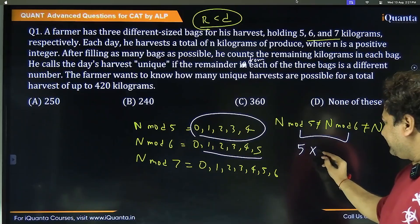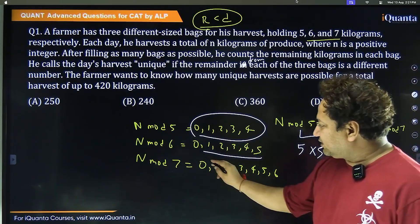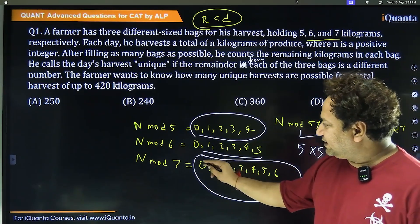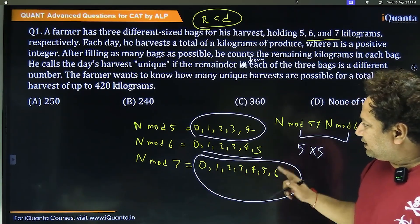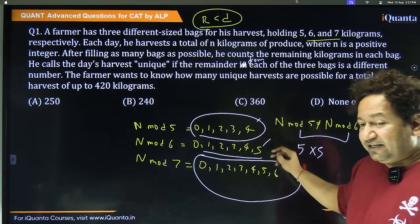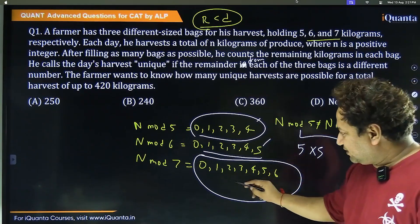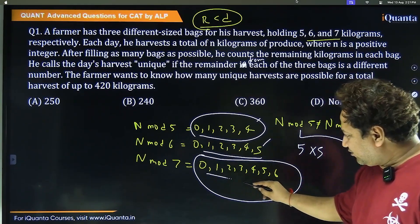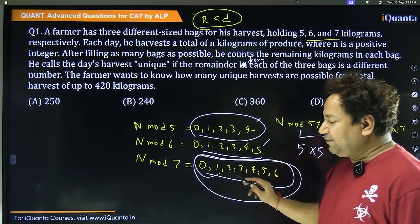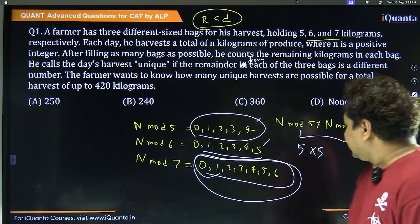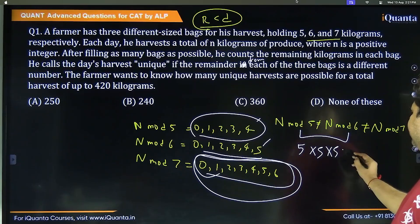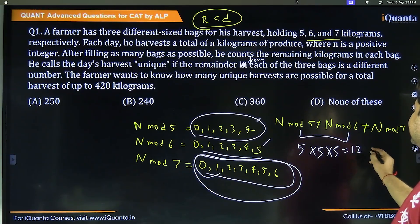Similarly, for mod 7 we have 7 possibilities. If I choose one from mod 5 and one from mod 6 which are distinct, then out of the 7 possible remainders for mod 7, only 5 will remain because 2 are already used. So we get 5 × 5 × 5 = 125 such numbers in one cycle.